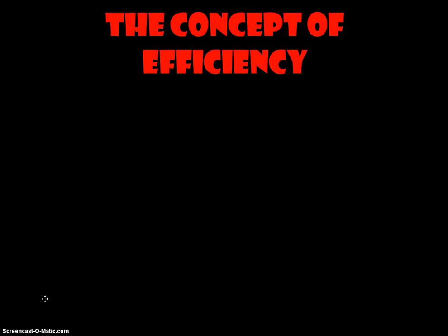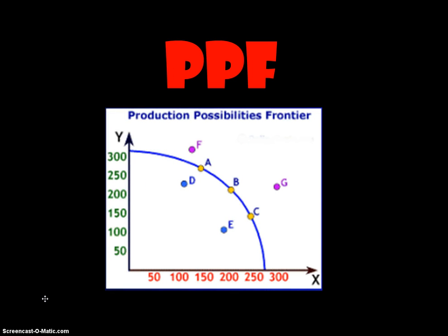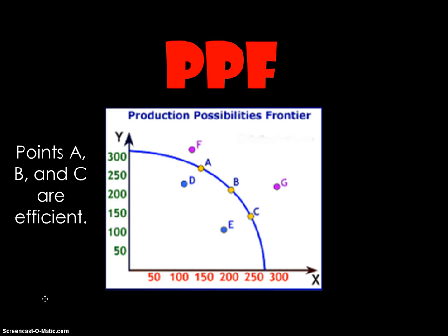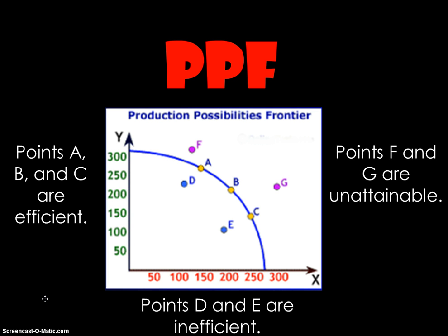Competition usually eliminates these inefficiencies — that's the beauty of the market economy. To conclude, points A, B, and C are considered efficient. Points D and E are inefficient because they're inside the curve — attainable but inefficient since we're not using all resources. Points F and G are unattainable. At this point, you would not be able to say which of points A, B, or C is most efficient; they're all equally efficient because our definition of efficiency simply means using all of our resources.